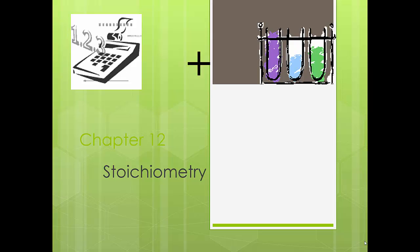So before we get started, let's get everything you need: your packets, obviously, a periodic table, and a calculator. Because as we're working these problems, I want you also checking them on your calculator. So sometimes if you need to pause me, you can do that, and you're checking it yourself so you can see where I'm getting my answers.